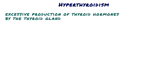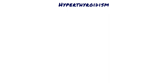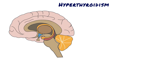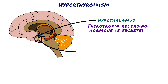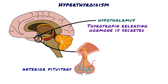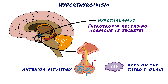Let's first review the normal physiology of thyroid hormones. Major control of the synthesis and secretion of thyroid hormones is via the hypothalamic-pituitary axis. Thyrotropin-releasing hormone is secreted by the hypothalamus and acts on the thyrotrophs of the anterior pituitary to cause secretion of thyroid-stimulating hormone, which then acts on the thyroid gland to stimulate the synthesis and secretion of thyroid hormones.